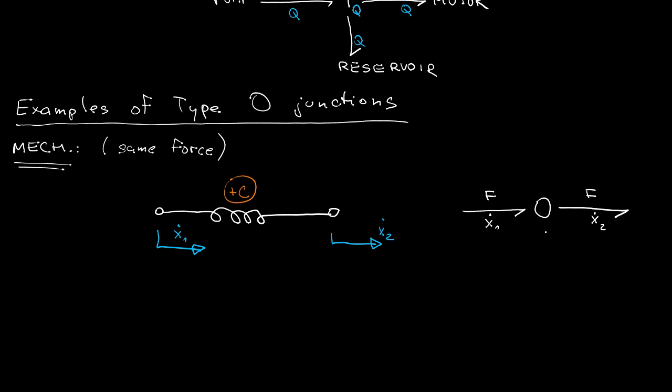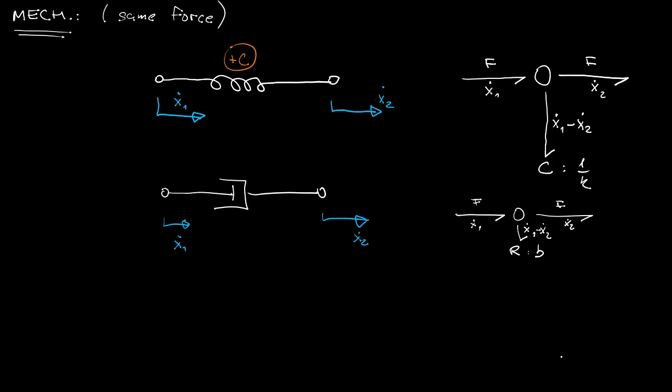So we can capture this using type 0 junctions like this which by the way also gives us in terms of velocities the relative velocity which is what matters for the accumulator of the energy. And in fact the situation is identical for a resistor. Of course there is no accumulation of energy in the resistor, we are just burning it. Nonetheless the amount of energy again depends on the relative velocity.